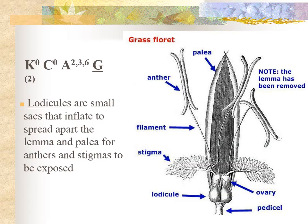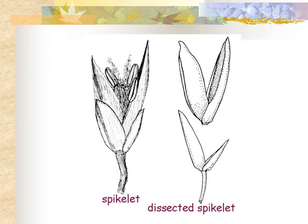Looking at the floral formula for Poaceae flowers, the calyx and corolla are absent. They have been reduced to structures known as lodicules — small sac-like structures that inflate to spread apart the lemma and palea in order to expose the anthers and stigmas. The androecium has either two, three, or six stamens. The gynoecium is syncarpous with two carpels and is superior. A spikelet with a single floret has an outer glume, inner glume, lemma, palea, and the flower within.